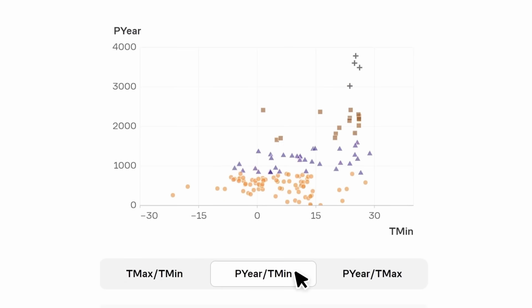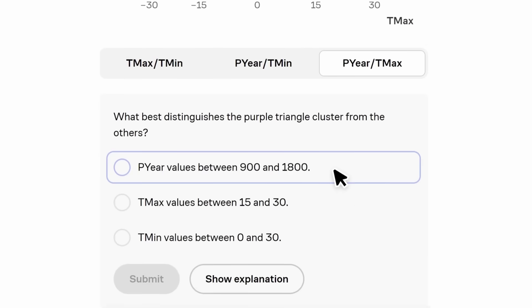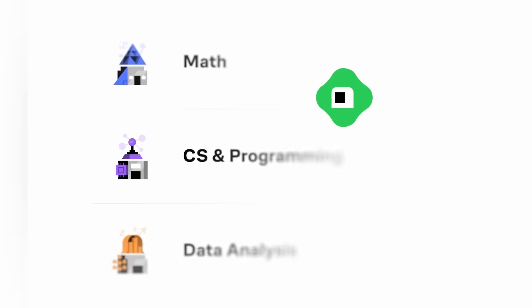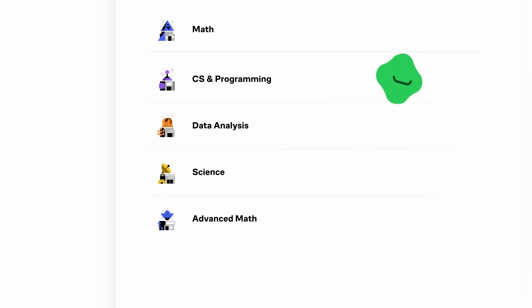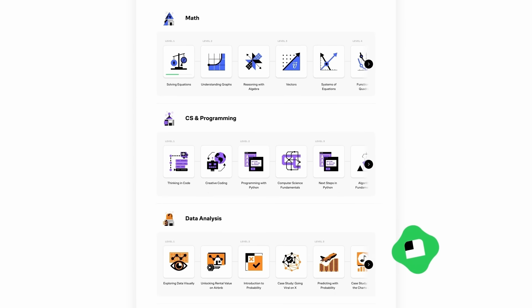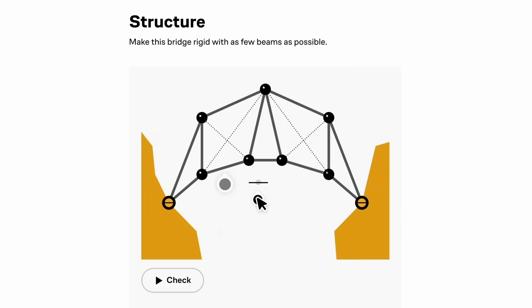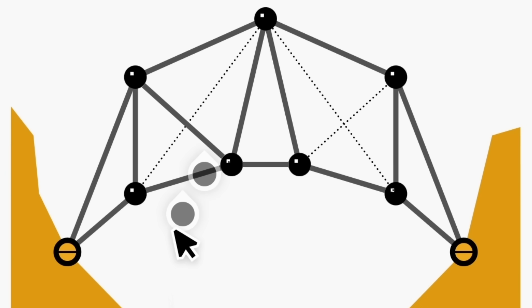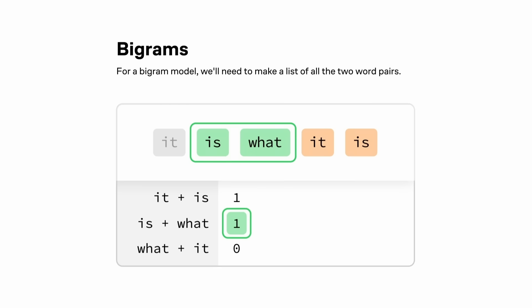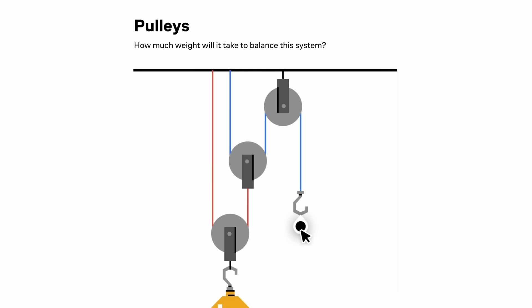They all use real-world examples, like what it means to go viral on X. Brilliant covers a large variety of topics in science, computer science, and maths, from general scientific thinking to dedicated courses on algebra or large language models. Just what I'm interested in. And they're adding new courses each month.